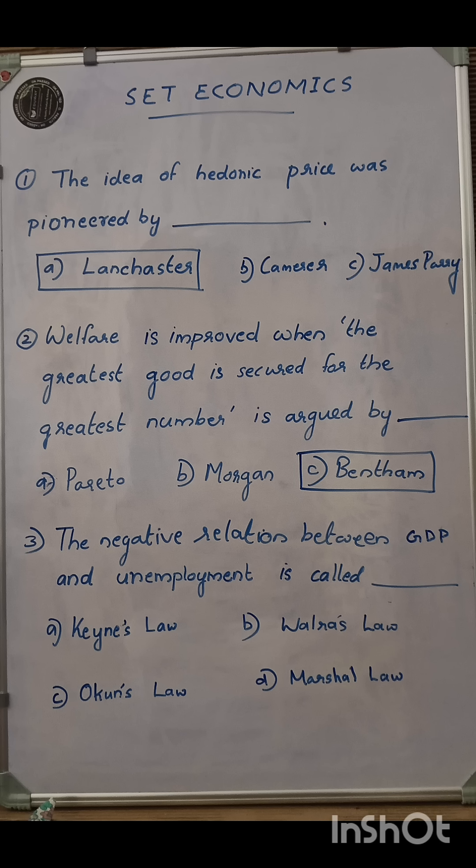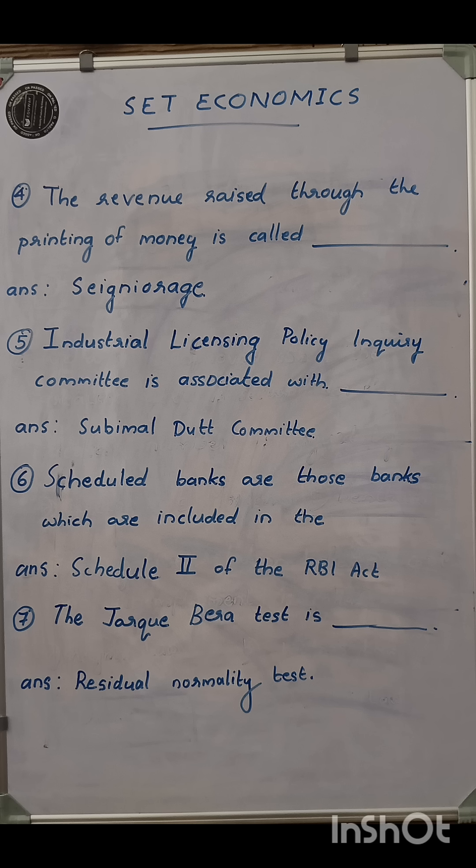Moving to the next section, the fourth question is: the revenue raised through the printing of money is called seigniorage. Fifth question: the industrializing policy inquiry committee is associated with the Subimaldad committee.